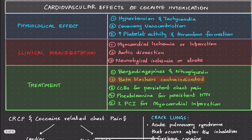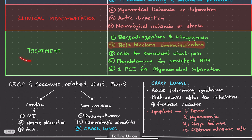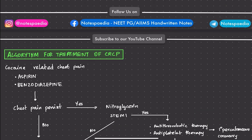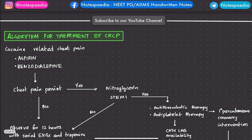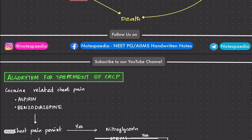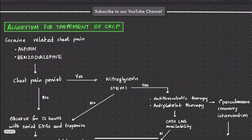Now for the treatment of cocaine-related chest pain: if a cocaine-intoxicated patient presents with CRCP, the first-line approach is benzodiazepines and nitroglycerin. Beta blockers should never be given — they are contraindicated. Calcium channel blockers are used for persistent chest pain, and phentolamine for persistent hypertension. Antiplatelets like aspirin are given first because cocaine increases platelet adherence. Then benzodiazepines are administered.